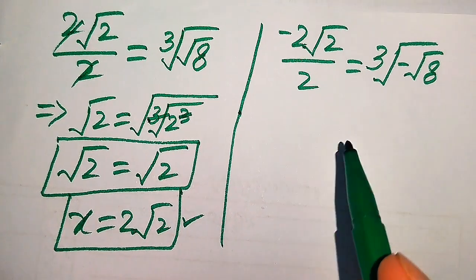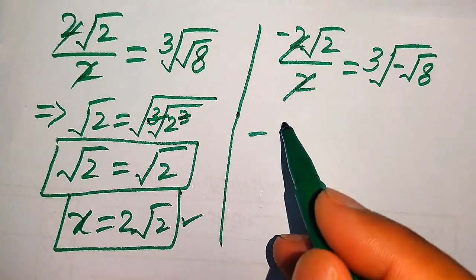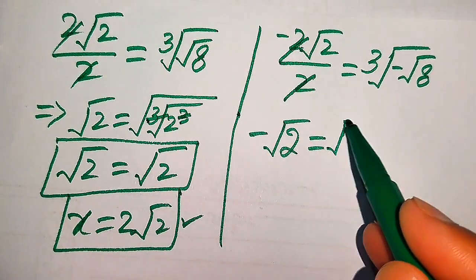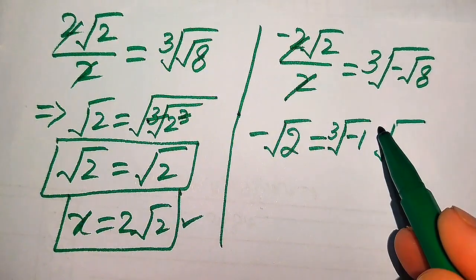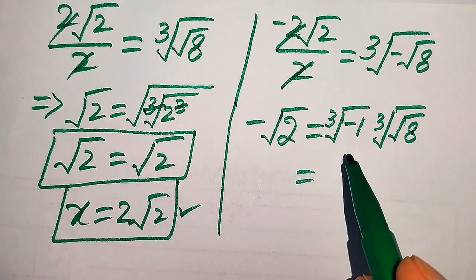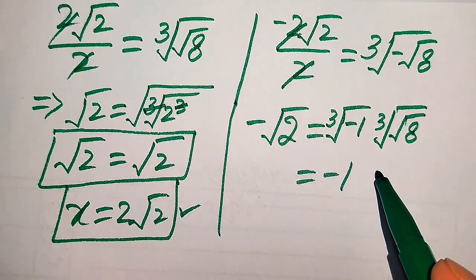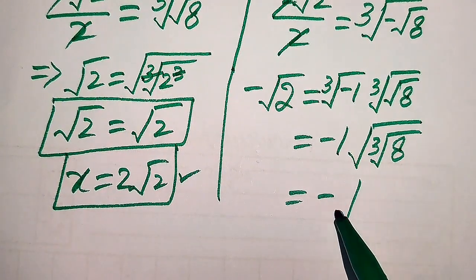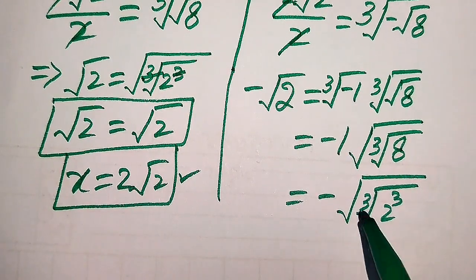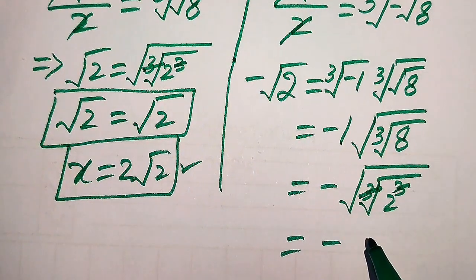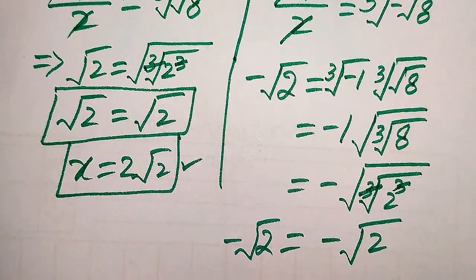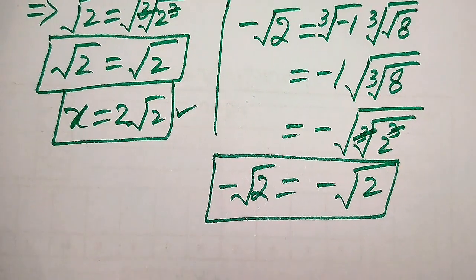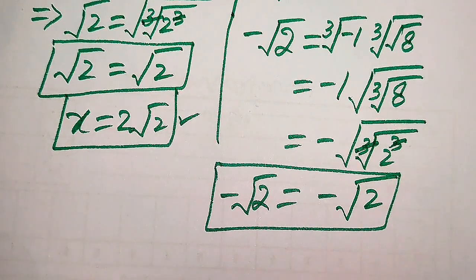For the other solution, the 2s cancel and we get minus times square root of 2. We apply cube root separately on minus 1 and on square root of 8. The cube root of minus 1 equals minus 1. Interchanging square root and cube root of 8, writing 8 as 2 cubed, the cube root cancels to give minus square root of 2. Both sides are equal, so x equals minus 2√2 is also a solution. Thank you for watching — please subscribe to the channel for more videos.